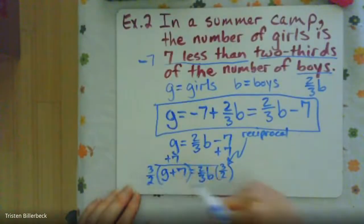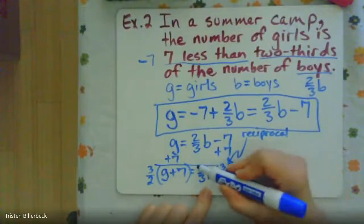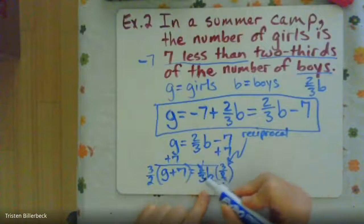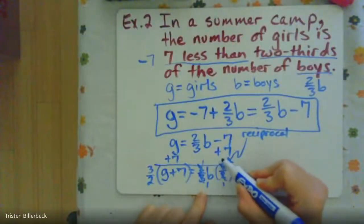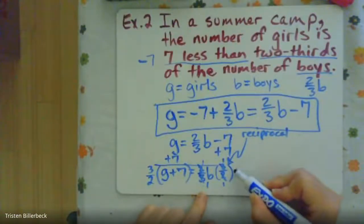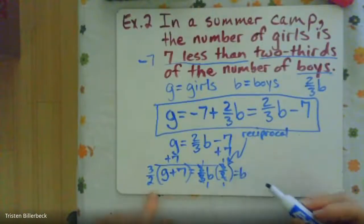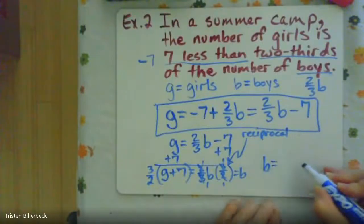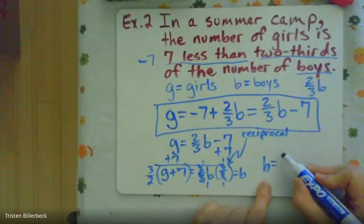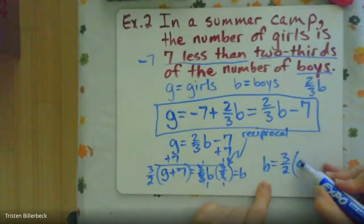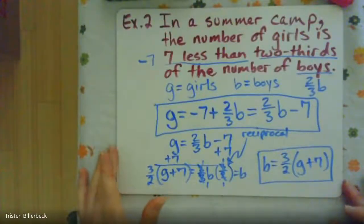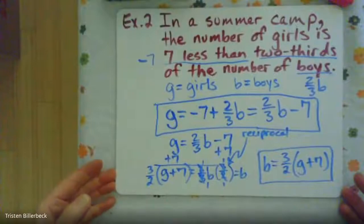So we're going to multiply by three-halves. What happens is this two is on top, this two is on the bottom, so they cancel. This three is on the bottom, this three is on top, so they cancel. So this equals B. So we have our equation for boys is boys equals three-halves girls plus seven. And that's how you find your two algebraic equations for that.